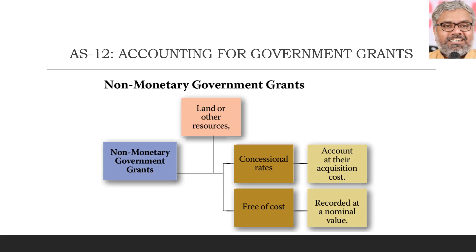Government normally sells those resources to organizations under normal circumstances. Imagine if government gave 5G spectrum as a grant — that is a non-monetary grant. Land also has a lot of money value, but it is not money itself. State governments give land to enterprises, multinational organizations, tens of acres, hundreds of acres. Non-monetary government grants can be given at concessional rates or free of cost.